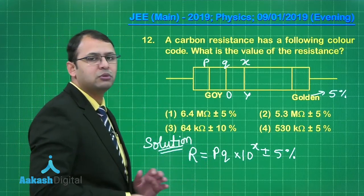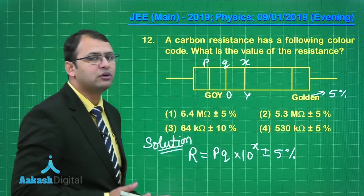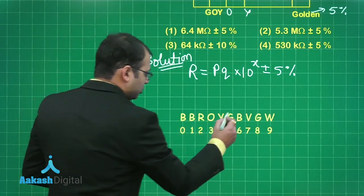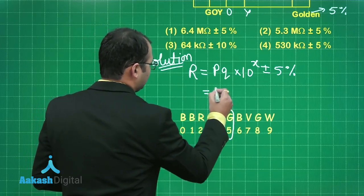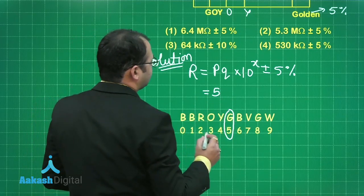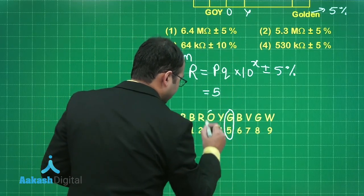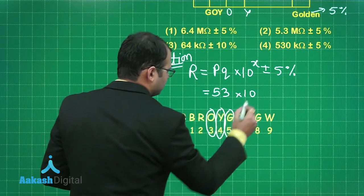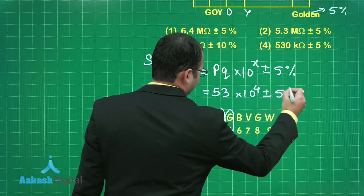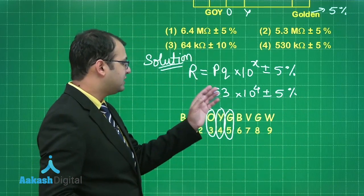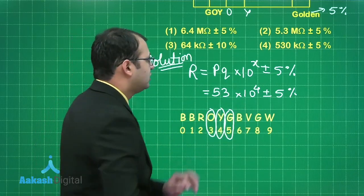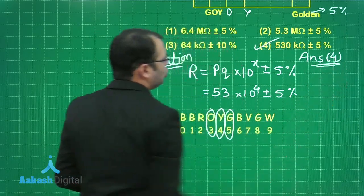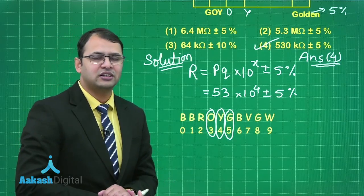Using the famous mnemonic — BB Roy from Great Britain has very good wife — we get the color codes. Green corresponds to 5, orange to 3, and yellow to 4. So the resistance is 53 into 10 to the power 4, plus or minus 5%, which equals 530 kilohms plus or minus 5%. Option number 4 is the correct answer. Let's move on to question number 13.